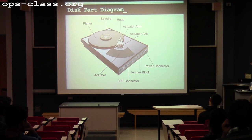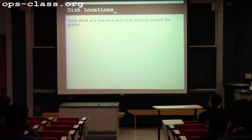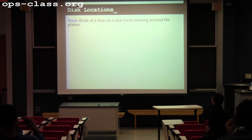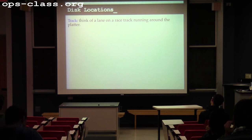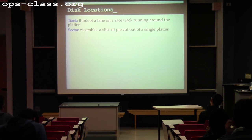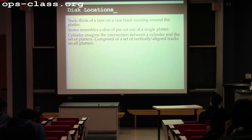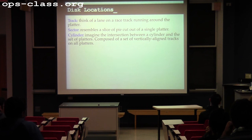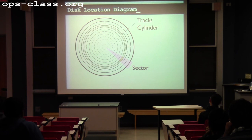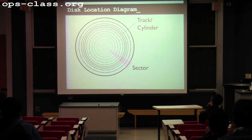When we talk about where data is, we use some terminology. A track is like a lane on a racetrack that runs all the way around the platter. A sector resembles a pie slice of one of the platters. A cylinder is a set of tracks vertically aligned — like taking a cylinder and vertically intersecting it with the stack of platters.